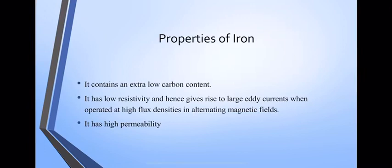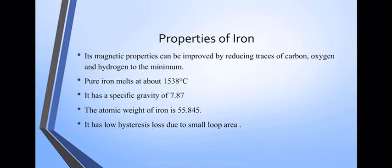It has high permeability. Permeability is opposite of reluctance. Its magnetic property can be improved by reducing traces of carbon, oxygen, hydrogen to the minimum. The pure iron melts at about 1538 degrees Celsius. It has a specific gravity of 7.87 and the atomic weight of iron is 55.845. It has low hysteresis loss due to small loop area.